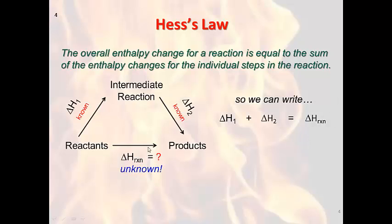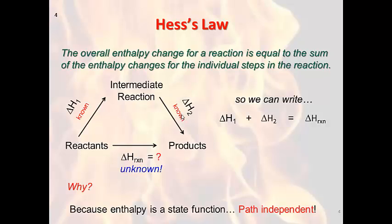And this doesn't have to just be two reactions — it can be as many as it needs to be. So why are we able to do this? Enthalpy is what's called a state function, so it's path independent. It doesn't matter how you get from the enthalpy of the reactants to the enthalpy of the products. As long as you end up and start at the same place, the change will be the same.